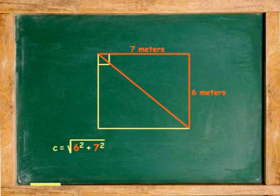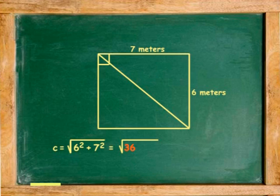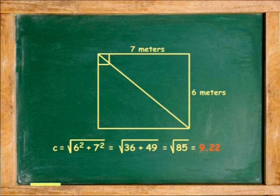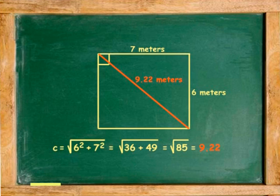Using the Pythagorean theorem, the diagonals become the hypotenuse of the triangle made up from the sides of the frame. Square 6, square 7, adding 36 and 49 you get 85. Square root of 85 is 9.22. The diagonal must be 9.22 meters for the room to be a rectangle.